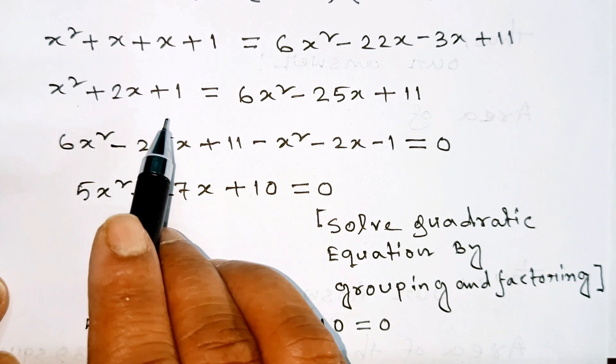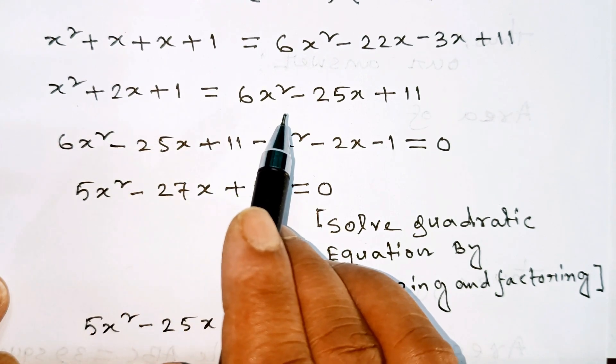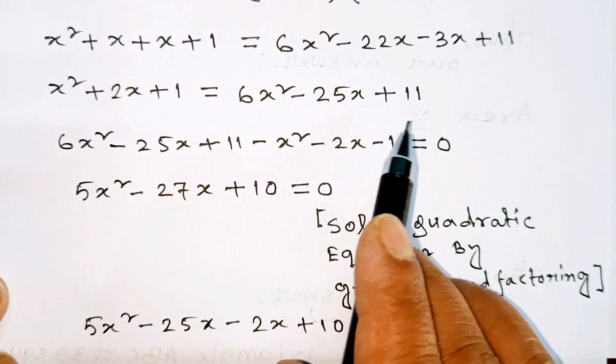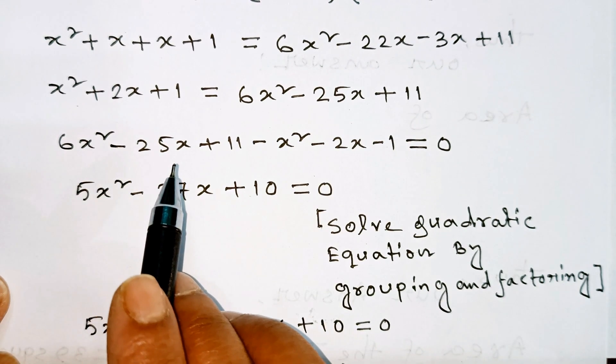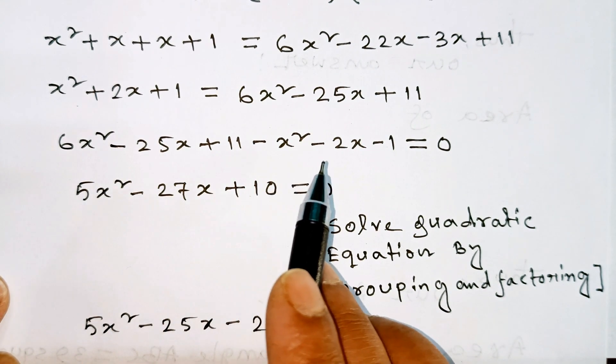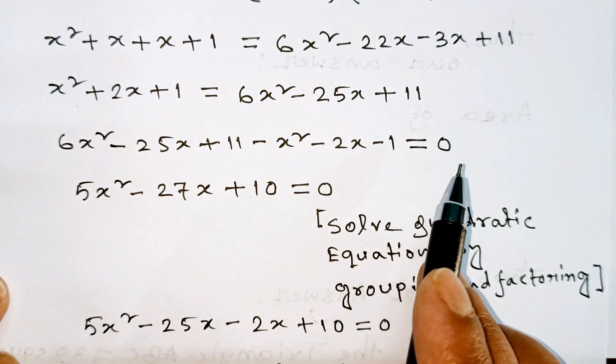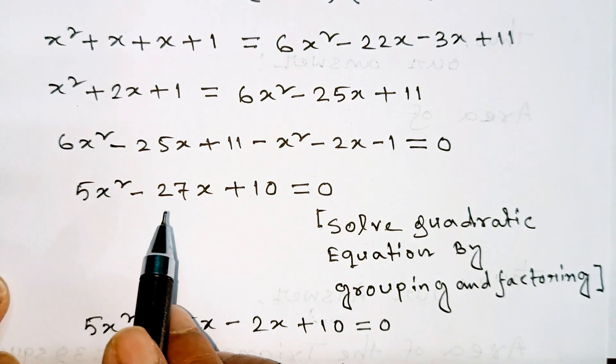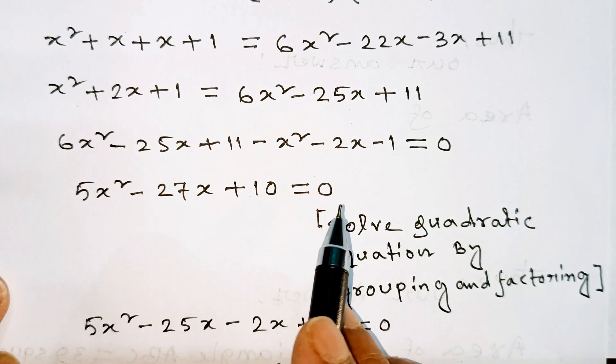x squared plus 2x plus 1 equals 6x squared minus 25x plus 11. Then 6x squared minus 25x plus 11 minus x squared minus 2x minus 1 equals 0, which simplifies to 5x squared minus 27x plus 10 equals 0.